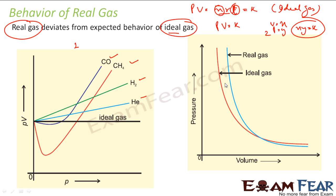When we drew the PV graph, the real gas and ideal gas didn't match. When we drew the PV versus P graph, the ideal gas was a straight line parallel to the X-axis, but the real gas showed deviation. The values changed based on temperature. Also, notably, when the pressure is zero, these values match with the ideal gas.